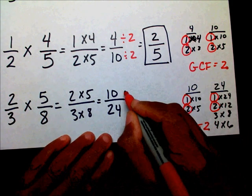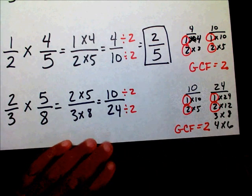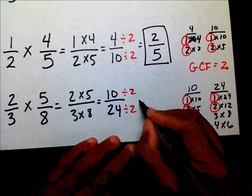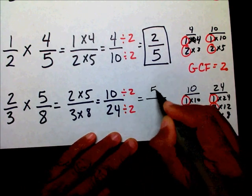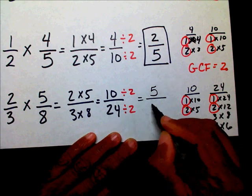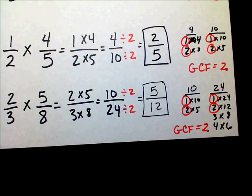So my greatest common factor is going to be two. So I'm going to divide my numerator and my denominator by two. And that ten divided by two is five. Twenty-four divided by two is twelve. This is my final answer. Five-twelfths.